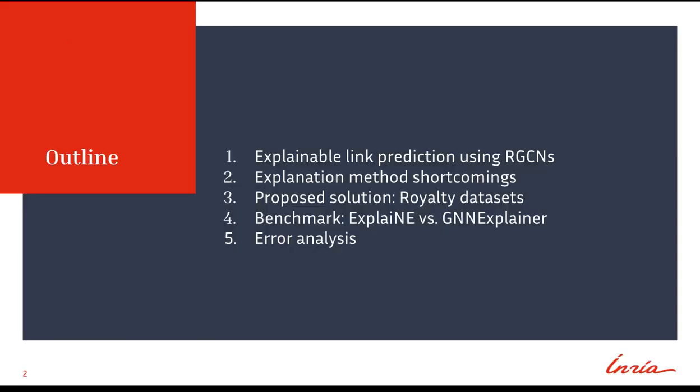This presentation is outlined as follows. First, we will discuss explainable link prediction using relational graph convolutional networks. We will then discuss explanation methods' shortcomings and our proposed solution. Then we discuss benchmarking state-of-the-art explanation methods using the proposed dataset and metric. Lastly, we discuss an error analysis performed on these explanation methods.